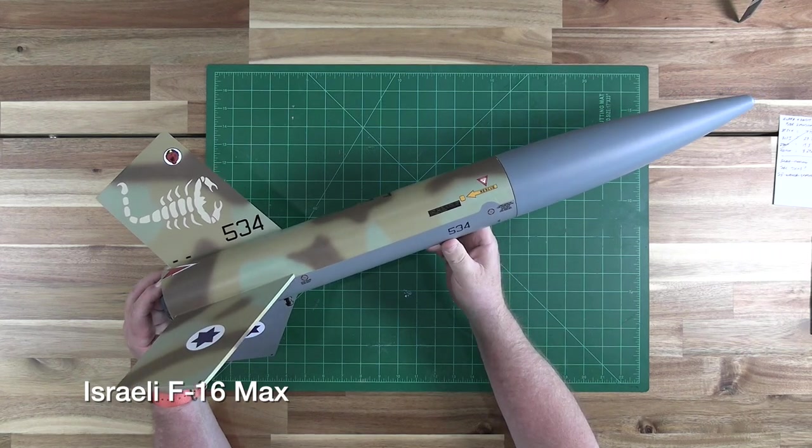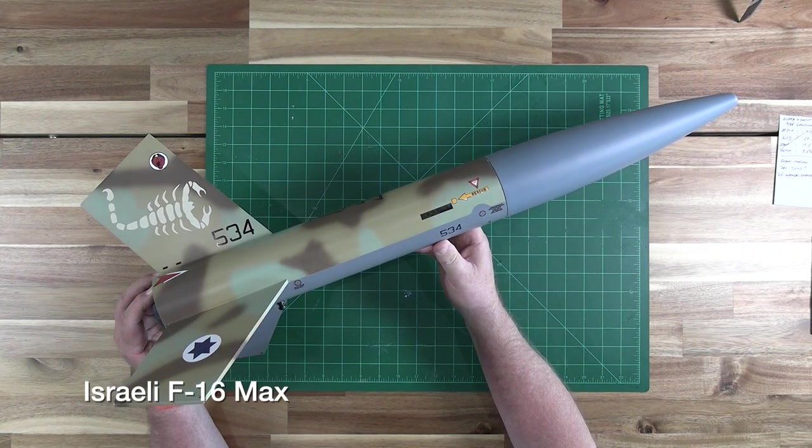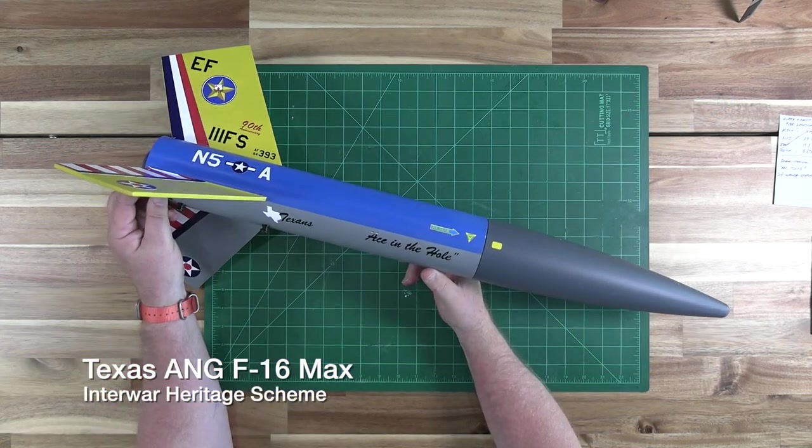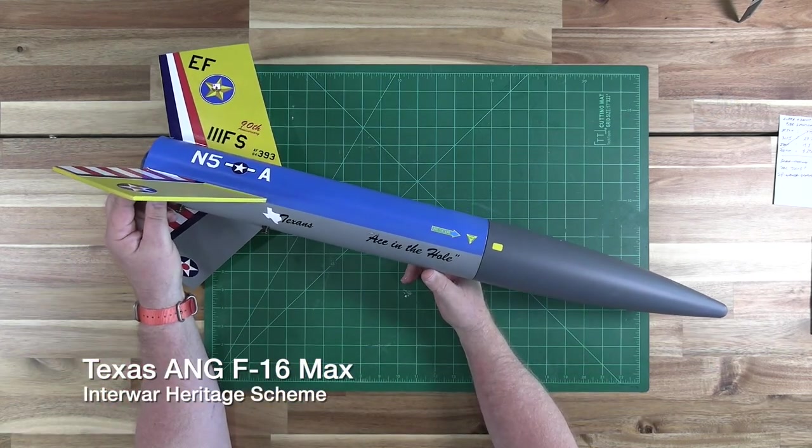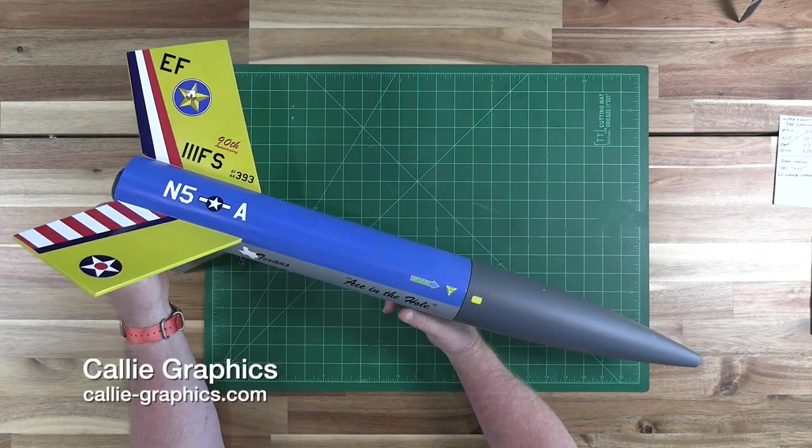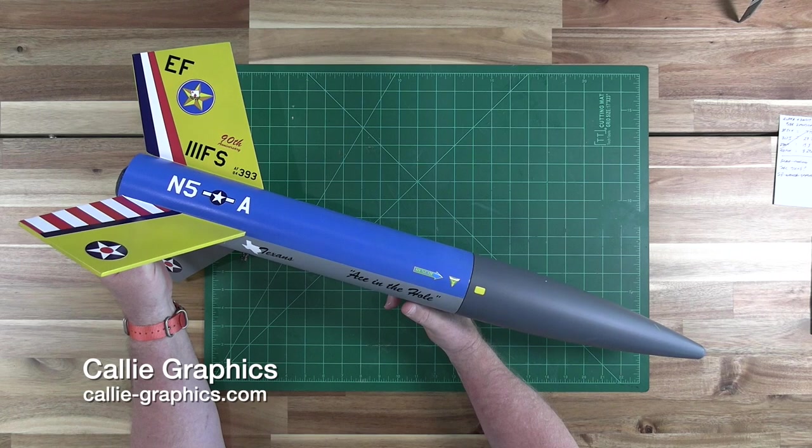Here's an Israeli F-16 inspired Max. And here's a Texas Air National Guard F-16 Max with an interwar heritage scheme. Again, the markings on all of these came from Cali Graphics.